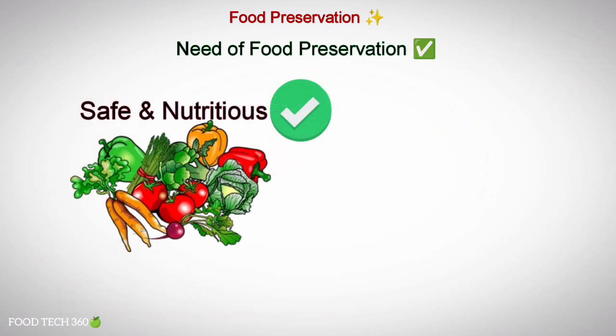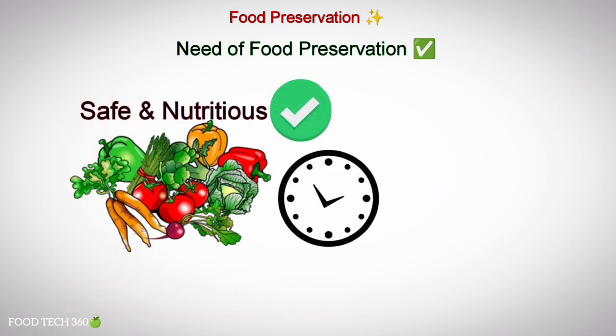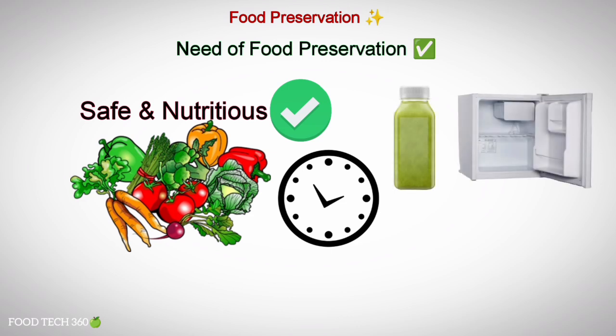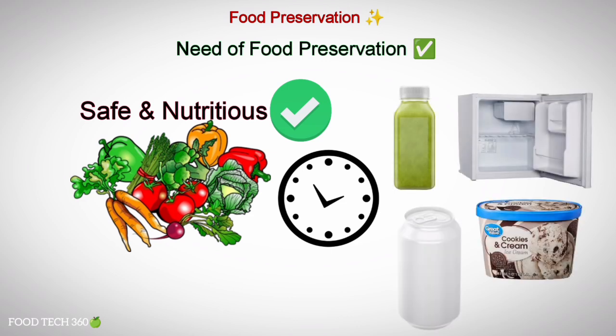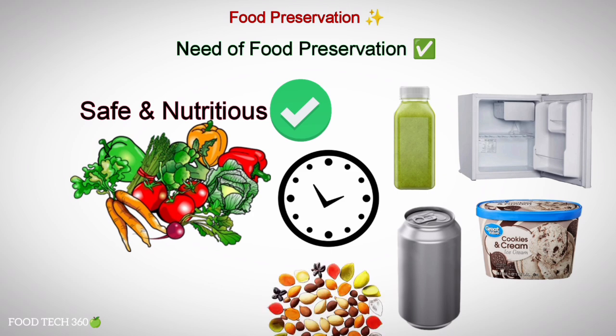Food preservation is the maintenance of safe and nutritious food for an extended period of time. Examples of food preservation include properly packed, refrigerated, frozen, canned and dried products.